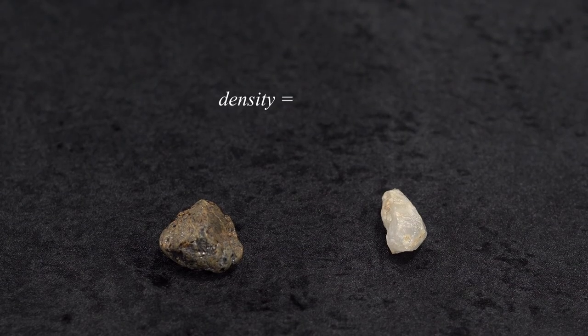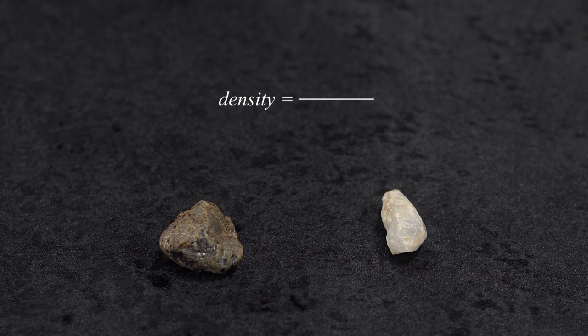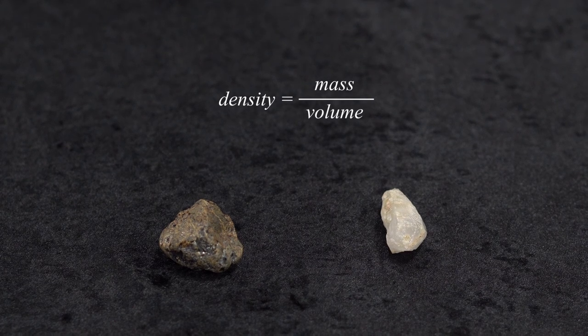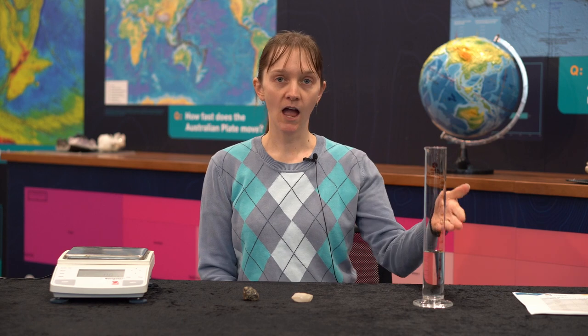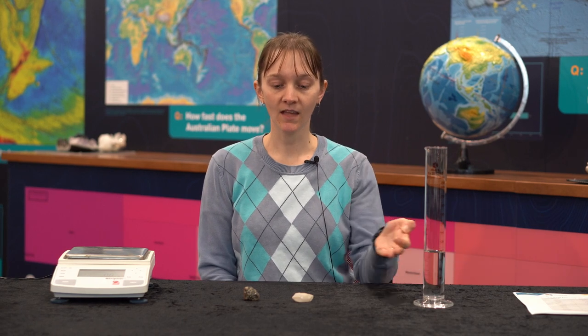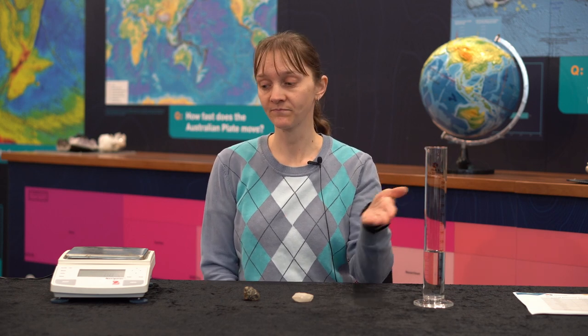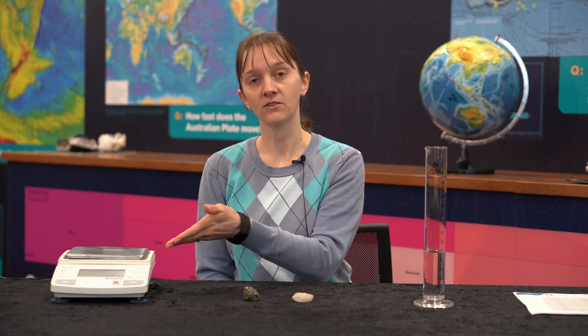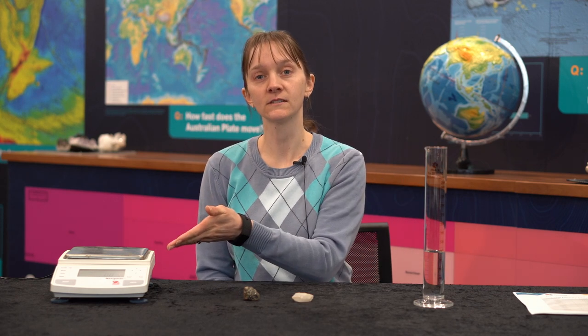Density is calculated by dividing the mass of an object by its volume. For this activity you will need a graduated cylinder, various unknown mineral specimens that fit in your graduated cylinder, accurate scales, a calculator, and a pencil and paper.